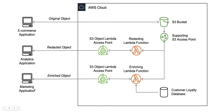Similarly, if your marketing application requires it in a different format, it follows the same path but with a different Lambda function and different code, which processes the same object and sends it back. In the future, if we have a fourth application requiring the data in yet another format, you can create a new access point and a new Lambda function with the processing code required by that application — retrieve the data, process it, and send it back. That is overall how S3 Object Lambda works in theory.